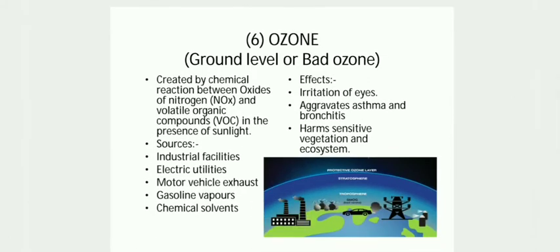Ground-level or bad ozone is created by a chemical reaction between oxides of nitrogen and volatile organic compounds in the presence of sunlight. Sources of ozone include industrial facilities, chemical solvents, etc. Ozone can irritate eyes and aggravates asthma and bronchitis.